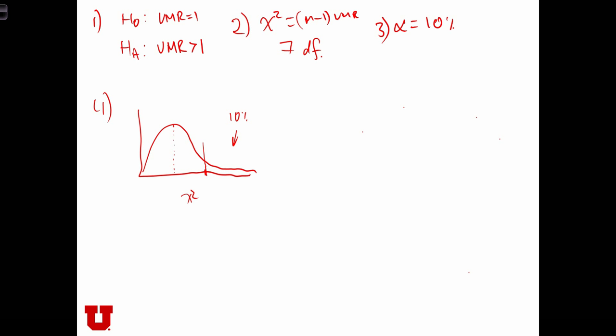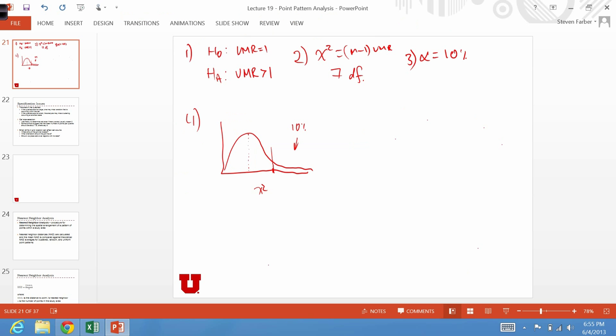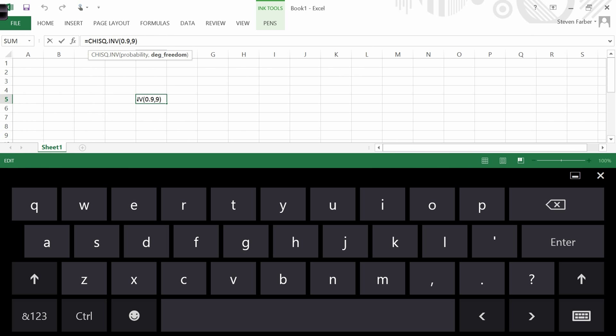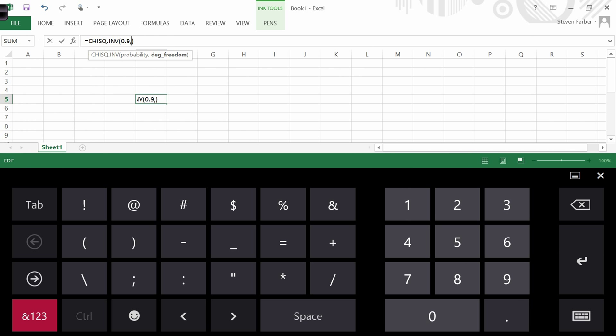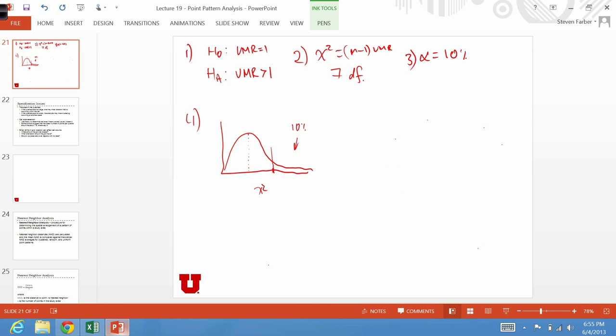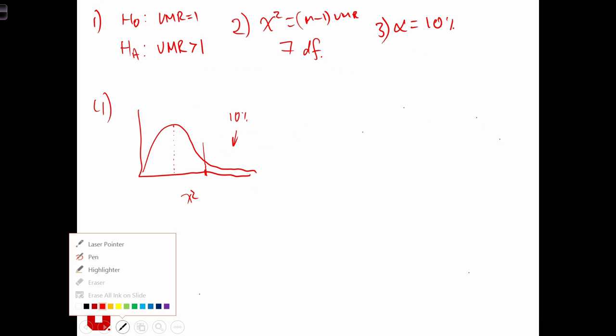We can go back to our Excel sheet. And we see here, if we want 10% in the tail, we're going to have to have 90% to the left of the tail. And I'm just going to change the degrees of freedom here from 9. And in this case, we have 7 degrees of freedom. So the critical value is 12.0. So this critical value over here is 12.0.